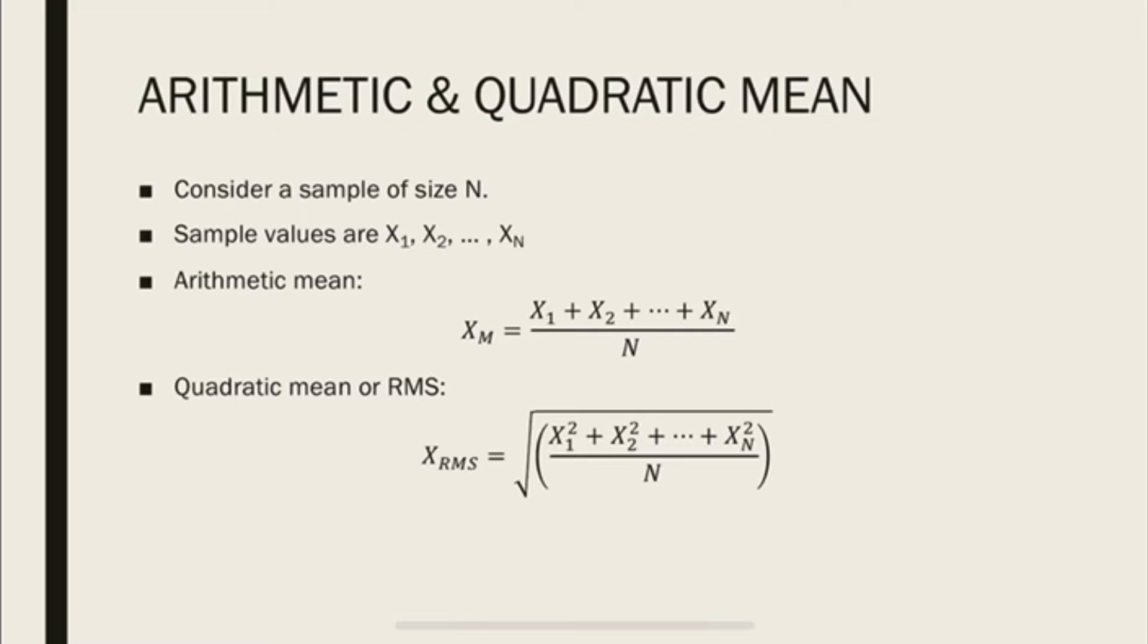But the quadratic mean or the RMS is a little different. You square the values first and then add them up. So on the numerator, you can see here it's x1 square plus x2 square all the way up to xN square and then divide it by the number of the sample size, N. And finally, take the square root. There you go. There we have the RMS or the root mean square.